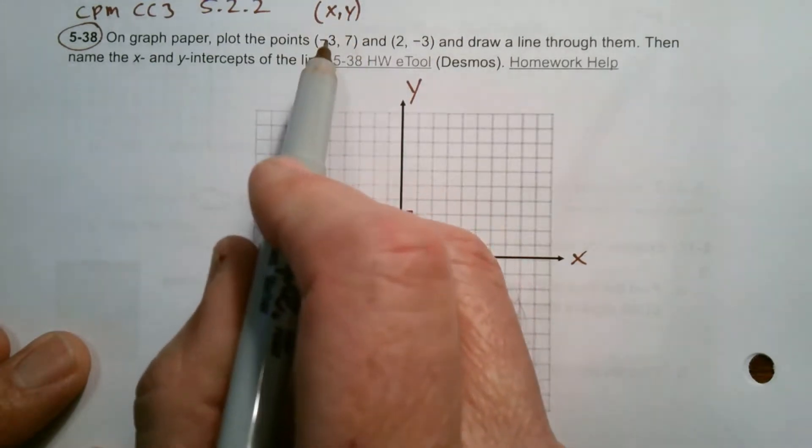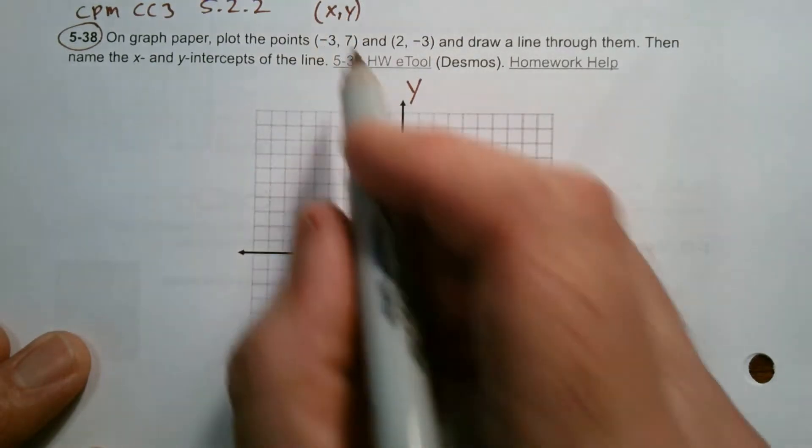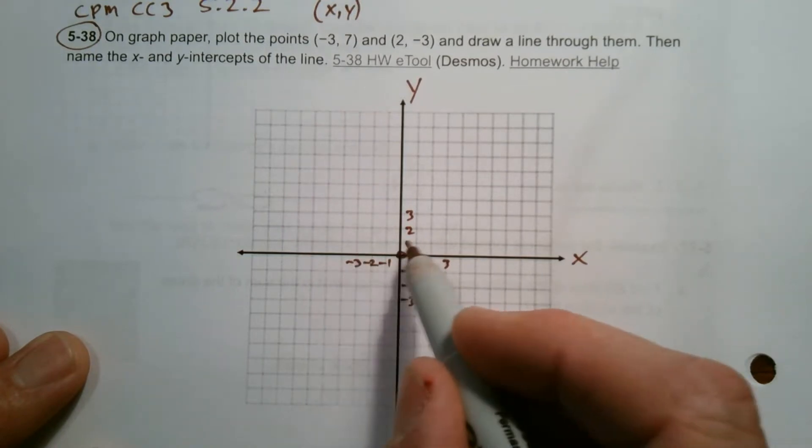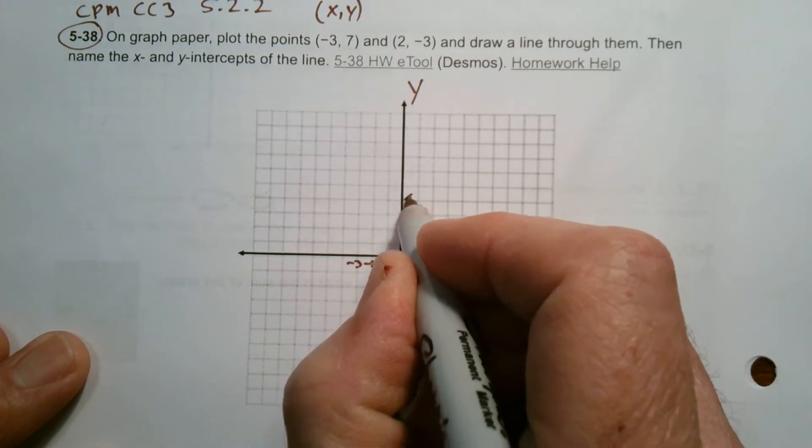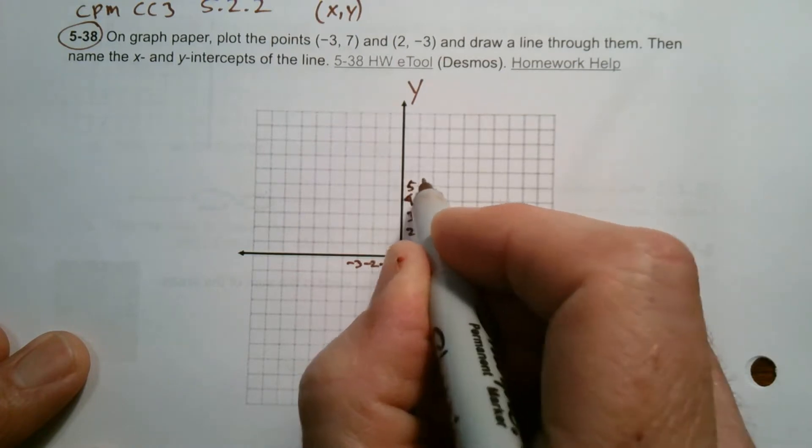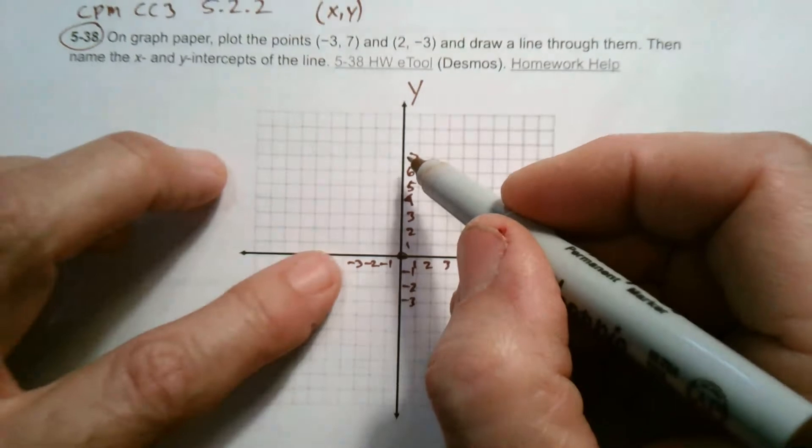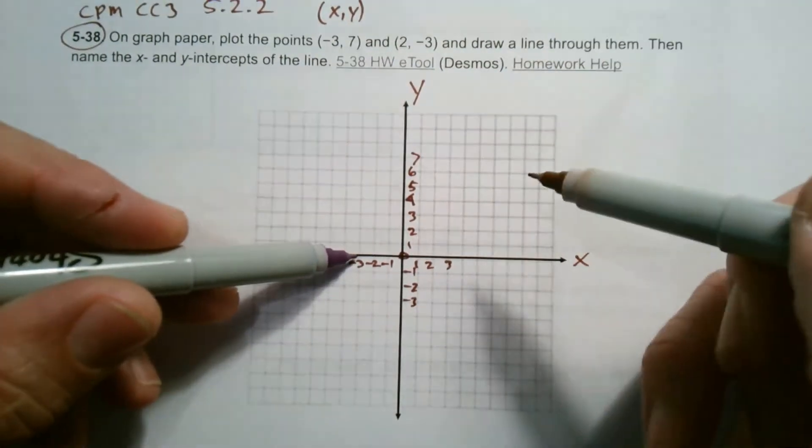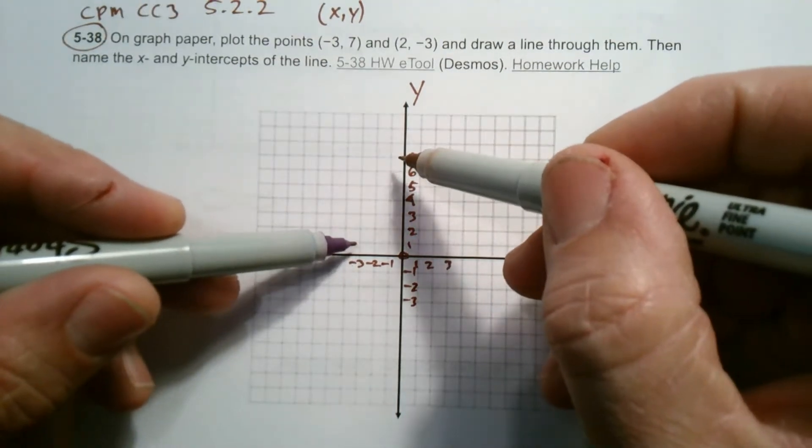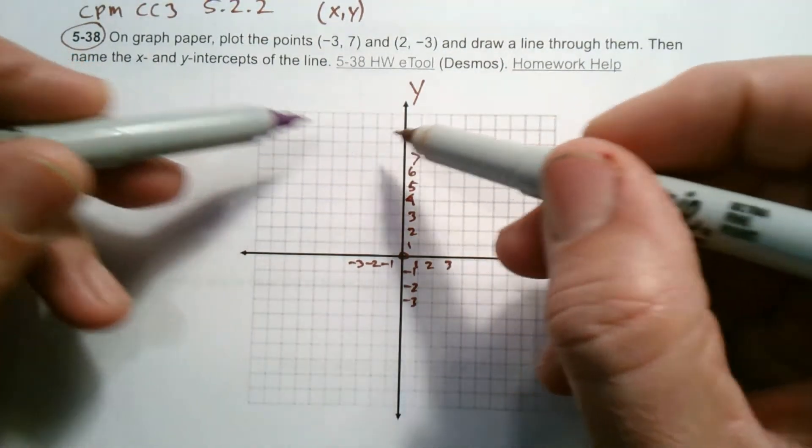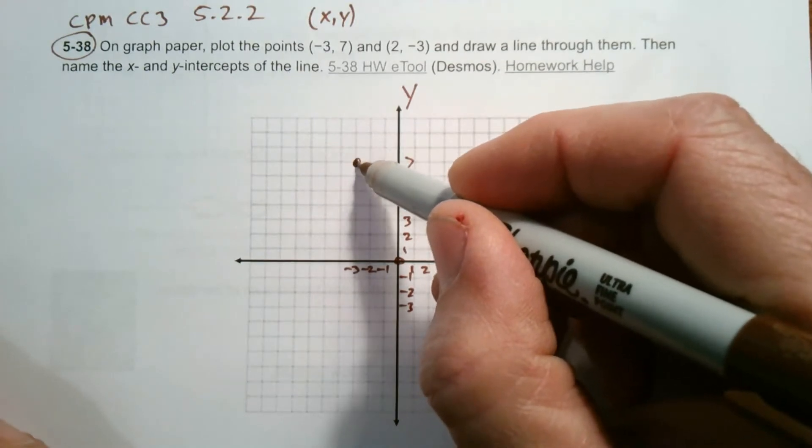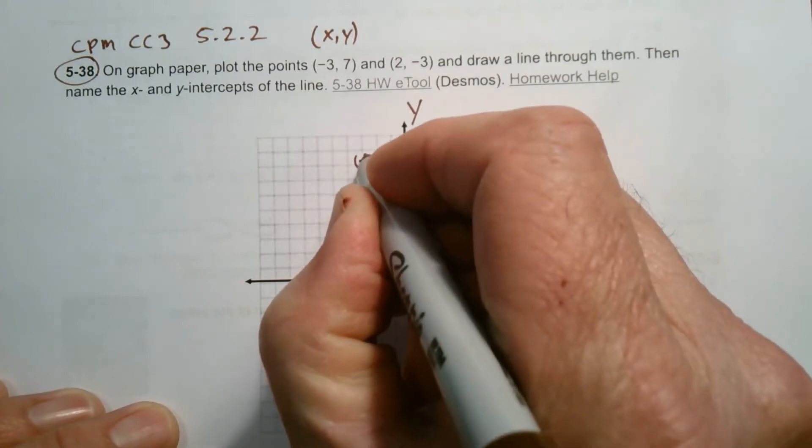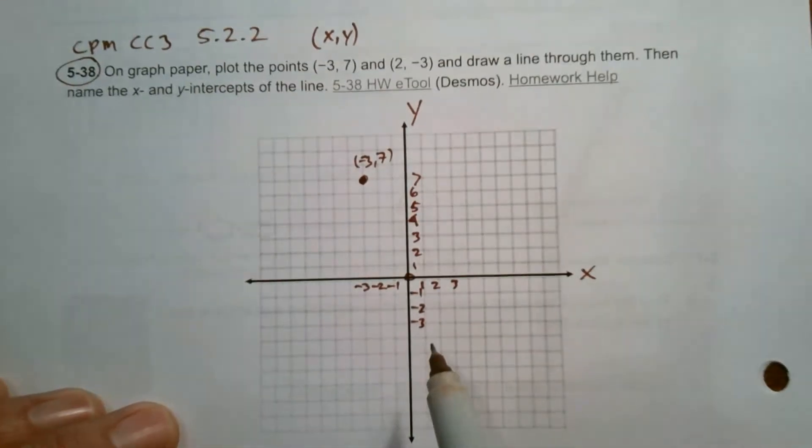So let's graph this. So I'm graphing negative 3, 7. That means the X is negative 3. So right here's where X is negative 3, and Y is 7. So where's Y is 7? So this is 4, 5, 6, 7. So if I connect, if I'm looking to find that point, where's X? X is negative 3 right here. Y is 7 there. So where do those connect? Those meet right there. So it's at this point would be considered the point negative 3, 7. That's how we graph points. So that's that point right there.